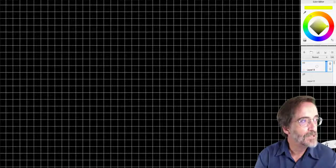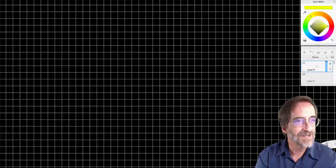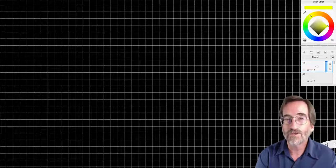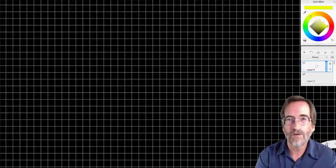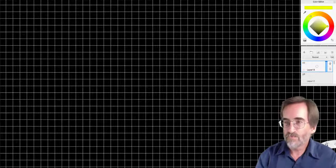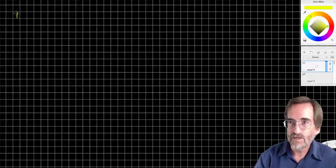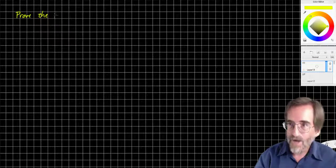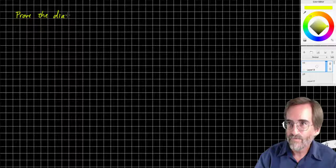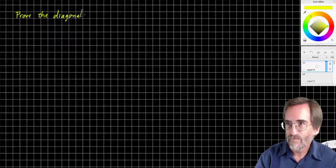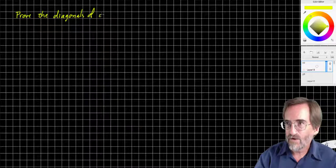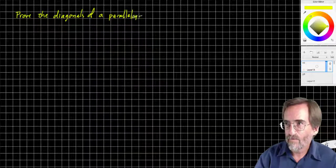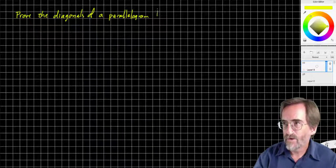All right, this is Geometry B, Unit 2 Lesson 8, I believe, and we are proving the general case using coordinate geometry. What I'm going to prove is this. I'm gonna write the statement. I'm gonna prove, prove the diagonals of a parallelogram bisect each other.